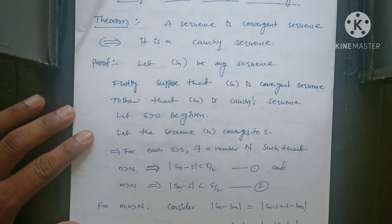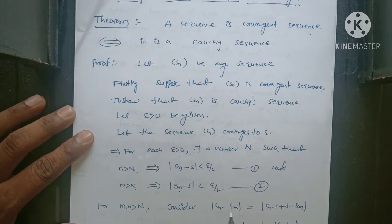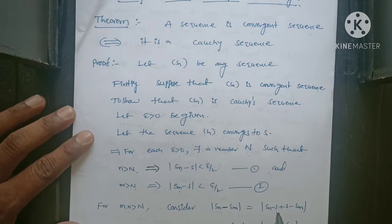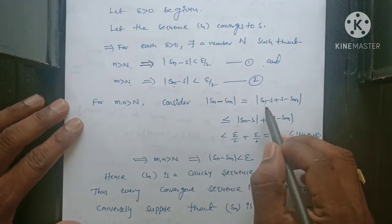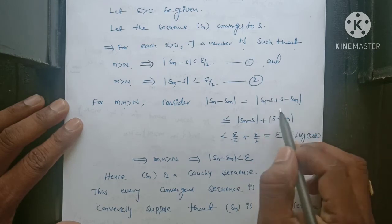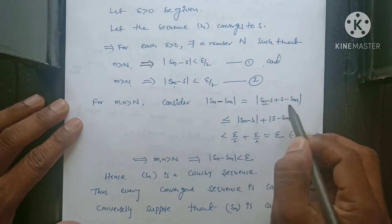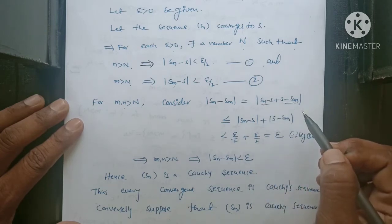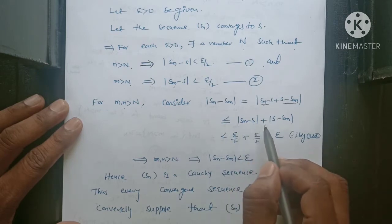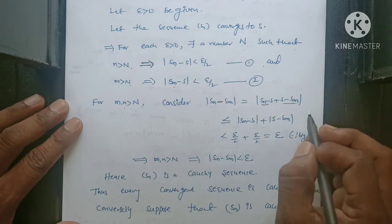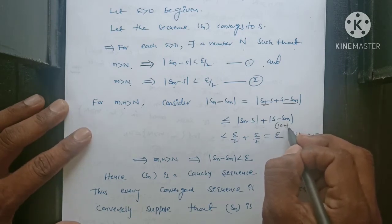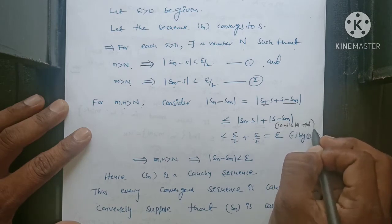Now consider mod(Sn minus Sm). Adding and subtracting L: mod(Sn minus Sm) equals mod((Sn minus L) plus (L minus Sm)). Using the triangle inequality — mod(A plus B) is less than or equal to mod A plus mod B — this is less than or equal to mod(Sn minus L) plus mod(S minus Sm). By equation 1, mod(Sn minus L) is less than epsilon by 2, and mod(Sm minus L) is also less than epsilon by 2. So the sum is epsilon by 2 plus epsilon by 2, which equals epsilon.